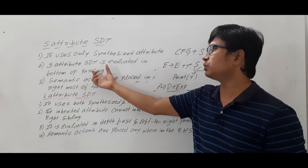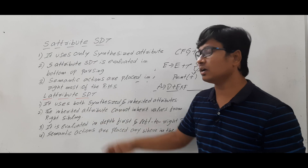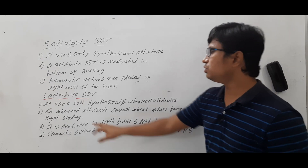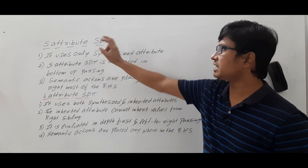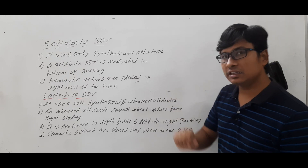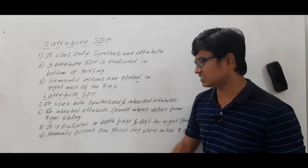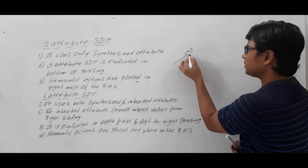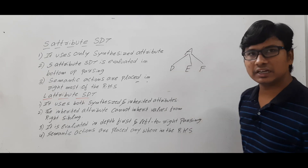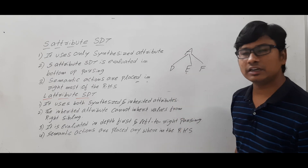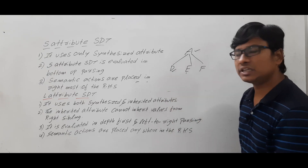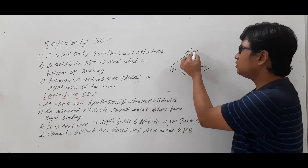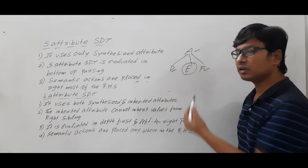S-attribute SDT uses synthesized attributes, performs bottom-up parsing, and semantic actions are placed at the rightmost of the RHS. Now let me discuss L-attribute SDT. It uses both synthesized and inherited attributes, whereas S-attribute SDT uses only synthesized. But there is one restriction on the inherited attribute in L-attribute SDT: the inherited attribute cannot inherit values from the right sibling. For A → DEF, E.value can be A.value or D.value, but not F.value.